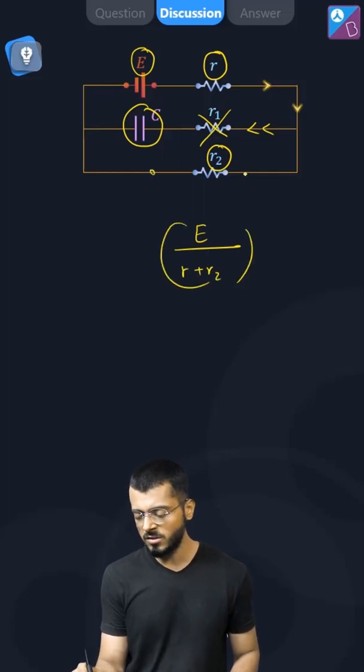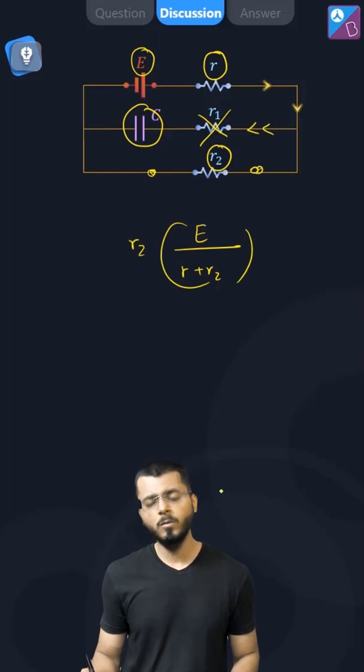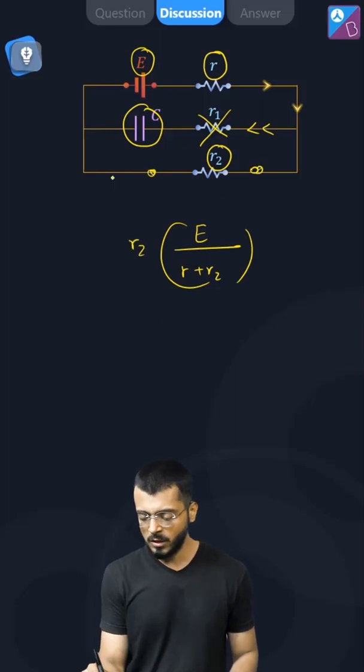And once we know the value of current through this resistance, the potential difference across this one is going to be R2 into the current through it. And once we know the potential difference across this arm, which is parallel to the capacitor arm.